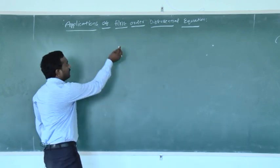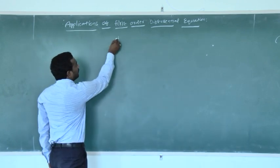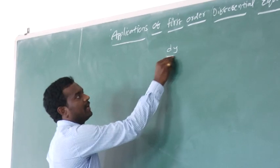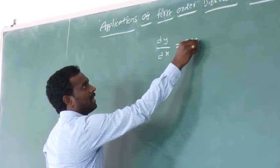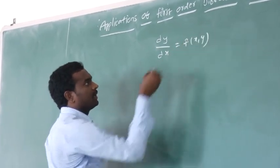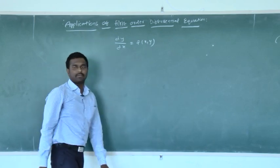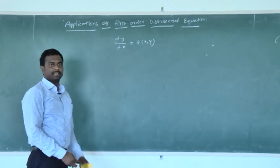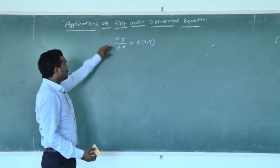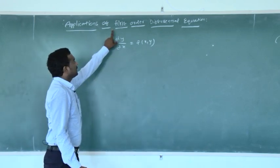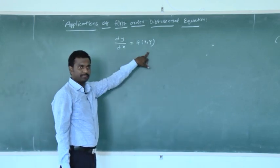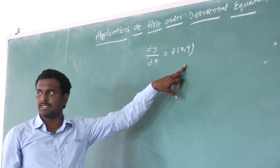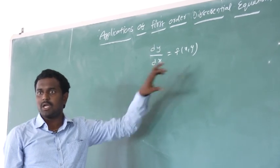The equation is in the form of dy by dx is equal to f of x comma y. This is the first order differential equation.